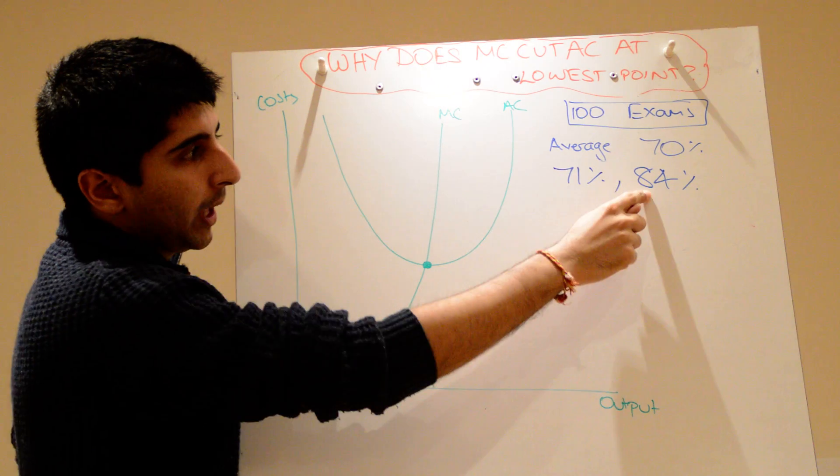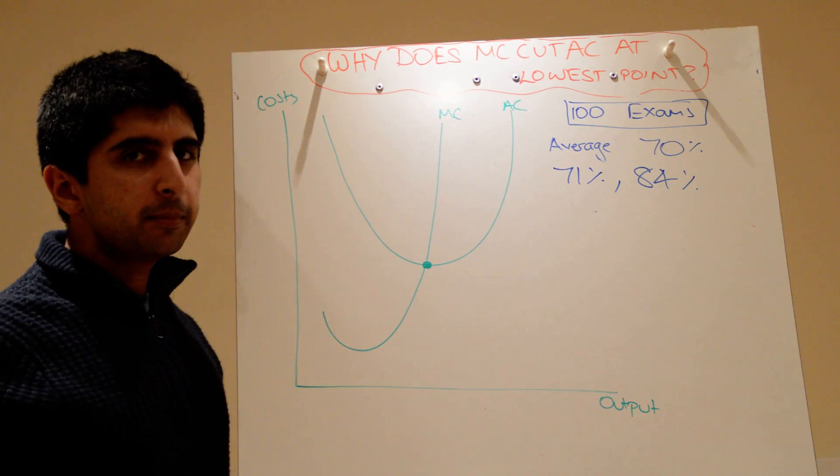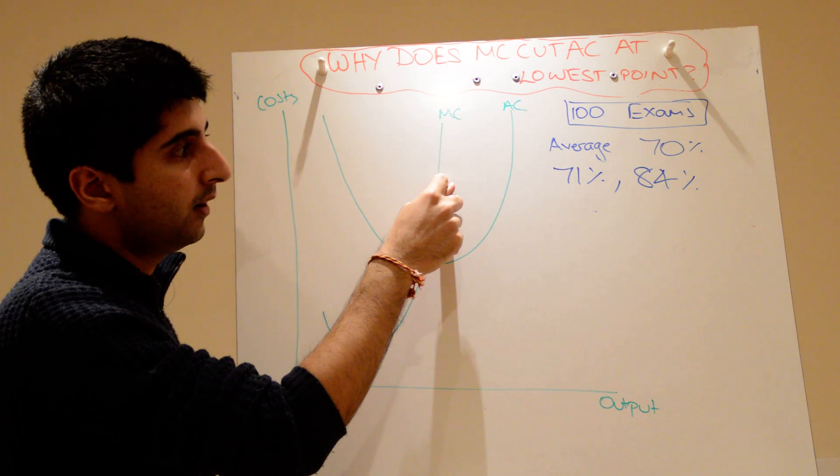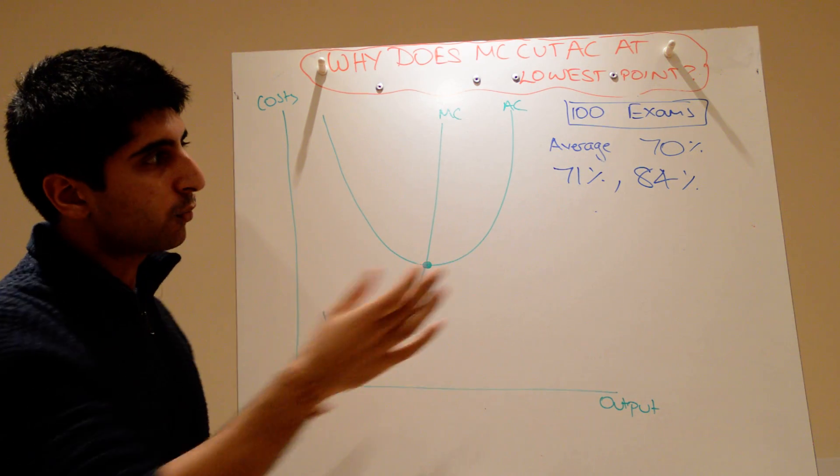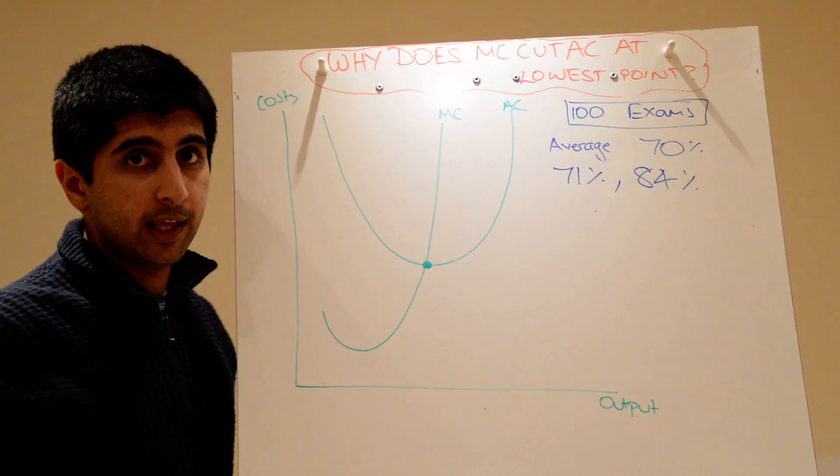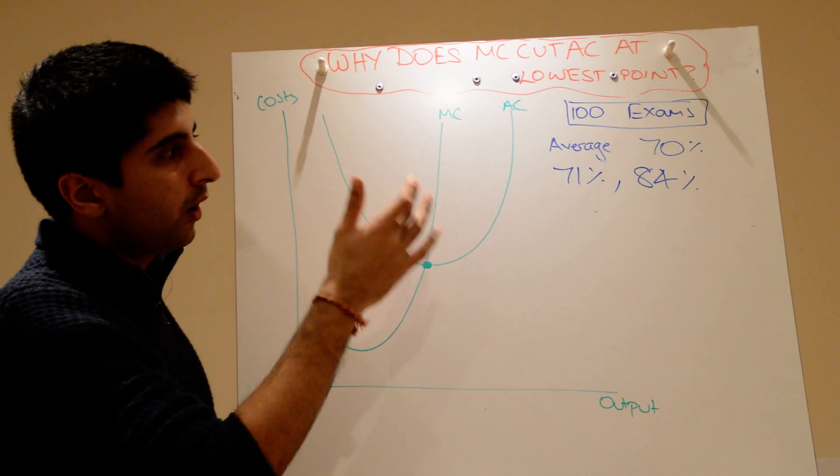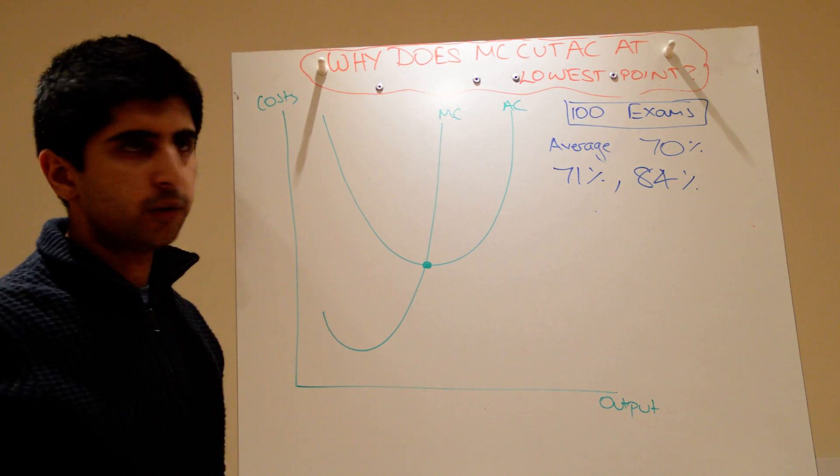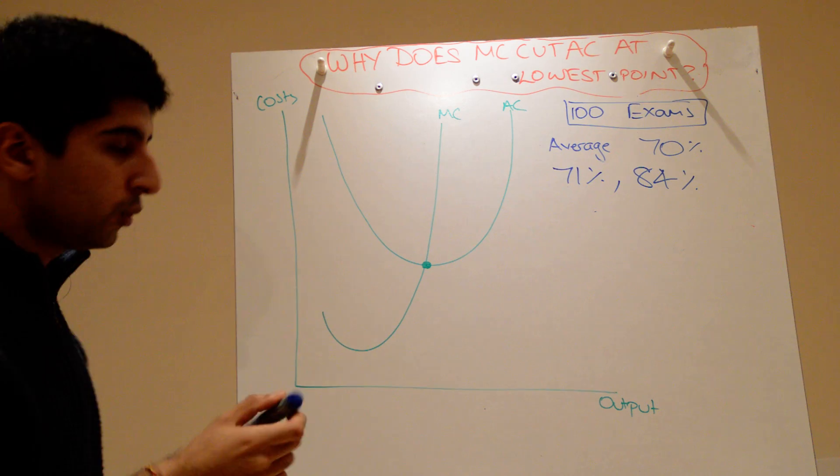And then your next paper, there's a marginal increase of 13% there. You've really increased a lot to 84%, maybe all the way over here. Well, that's a big increase, and that's really going to bolster your average quite a lot. So your average will increase very quickly. So again, if your marginal score is more than the average, your average will rise. It makes logical sense. Let's just write those two rules down.